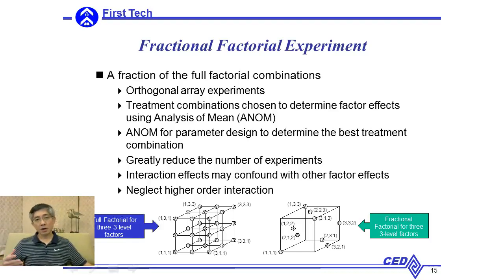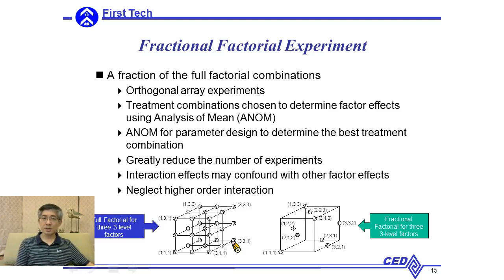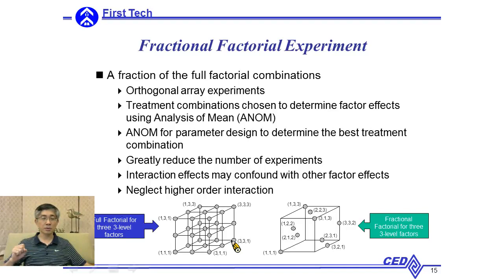However, the number of experiments will increase very rapidly as the number of factors or levels increase. For example, if we have three factors and each factor has three levels, the total number of experiments for full factorial experiments will be 27, just like the cube over here, with factors x, y, and z. And if the number of levels increase, the number will increase very rapidly. For instance, if we have five three-level factors, then the total number of experiments will become 243, which is a lot if you are talking about real engineering applications.